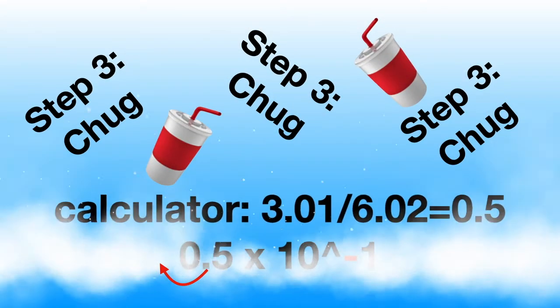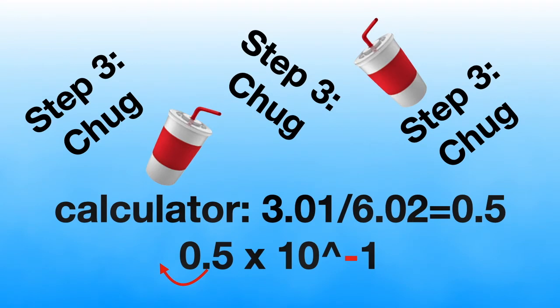Step 3, chug. Grab your calculator and punch in 3.01 divided by 6.02 and that gives you 0.5. If you don't have a scientific calculator, do not include the exponents until the end so you won't get confused.